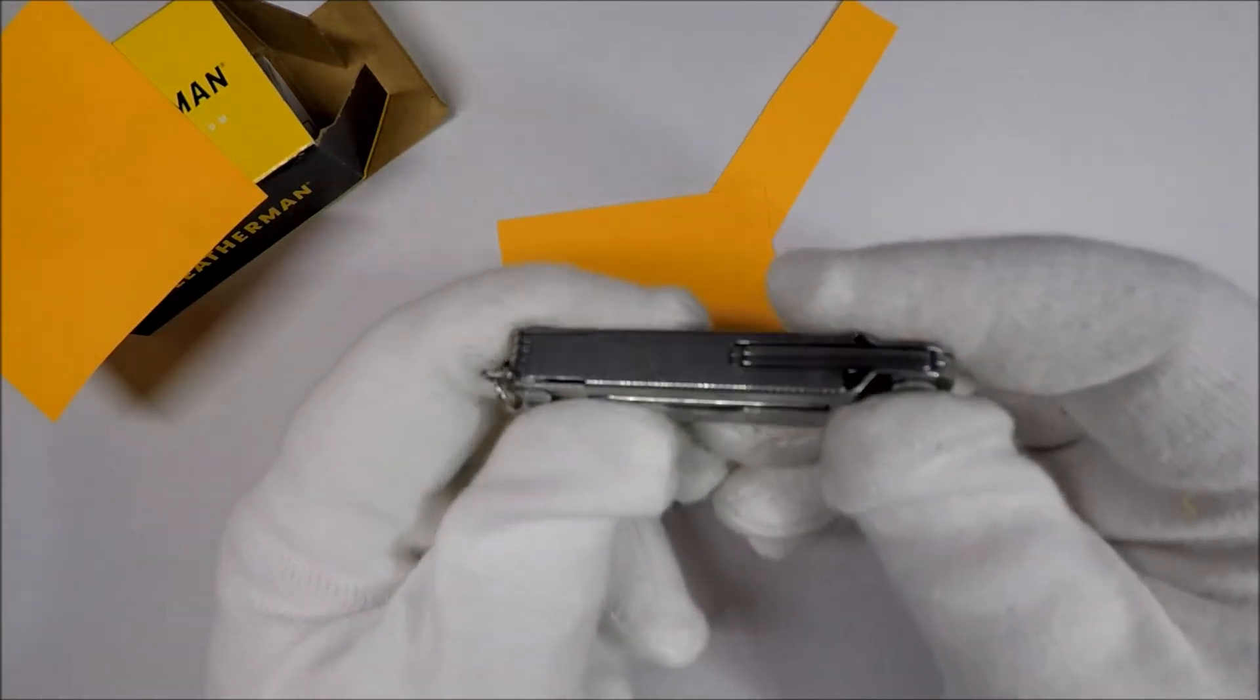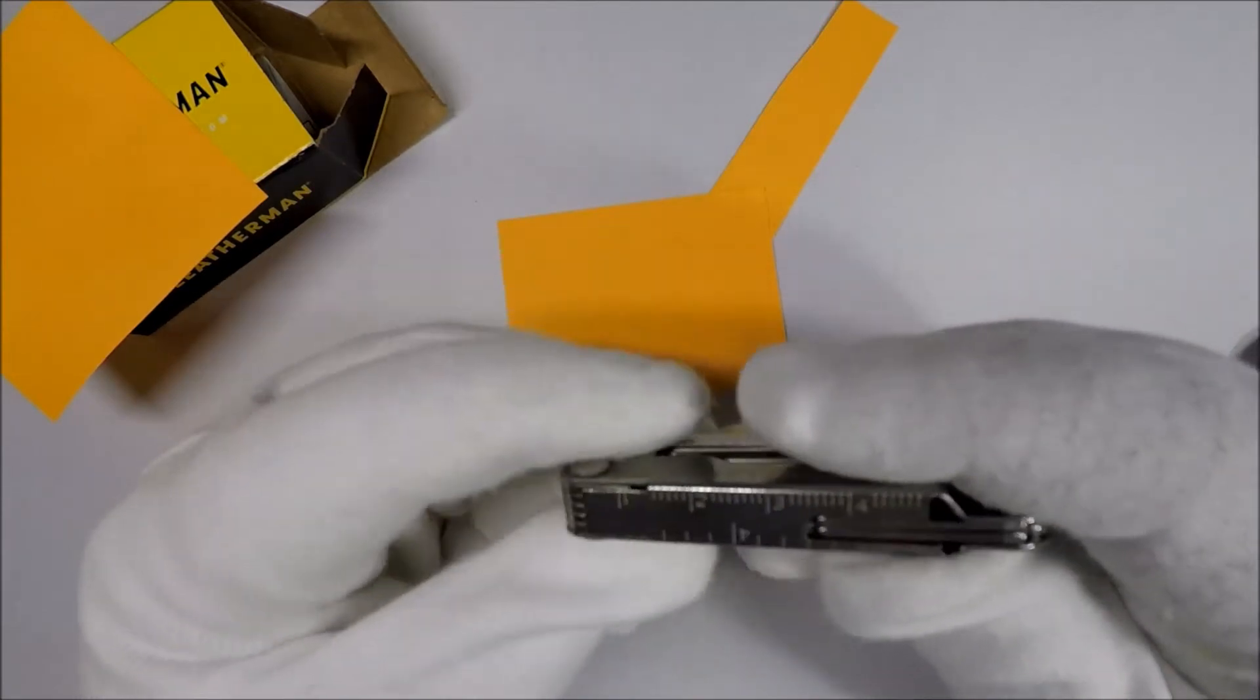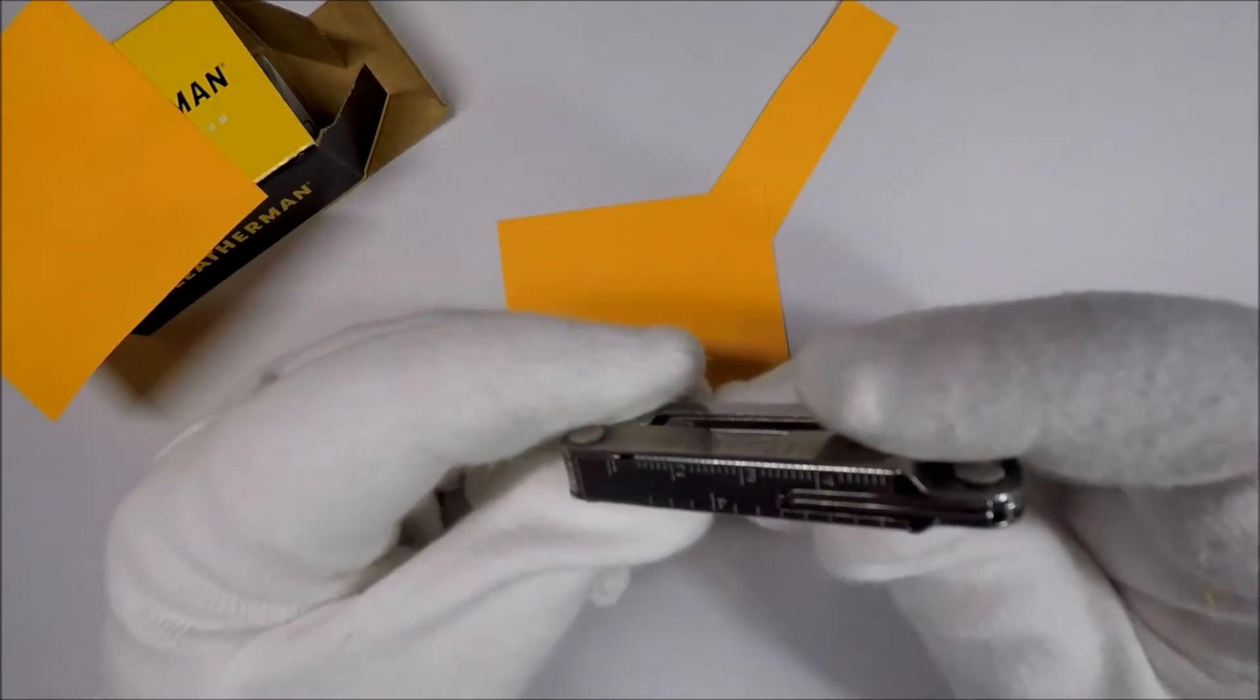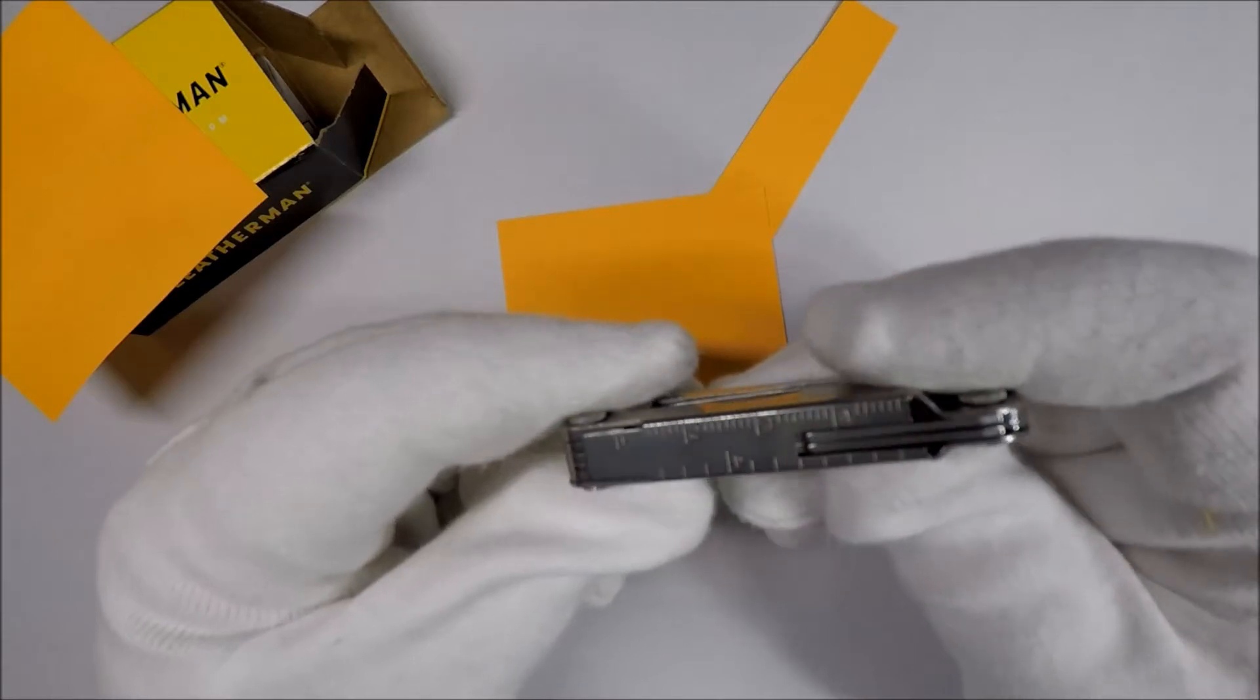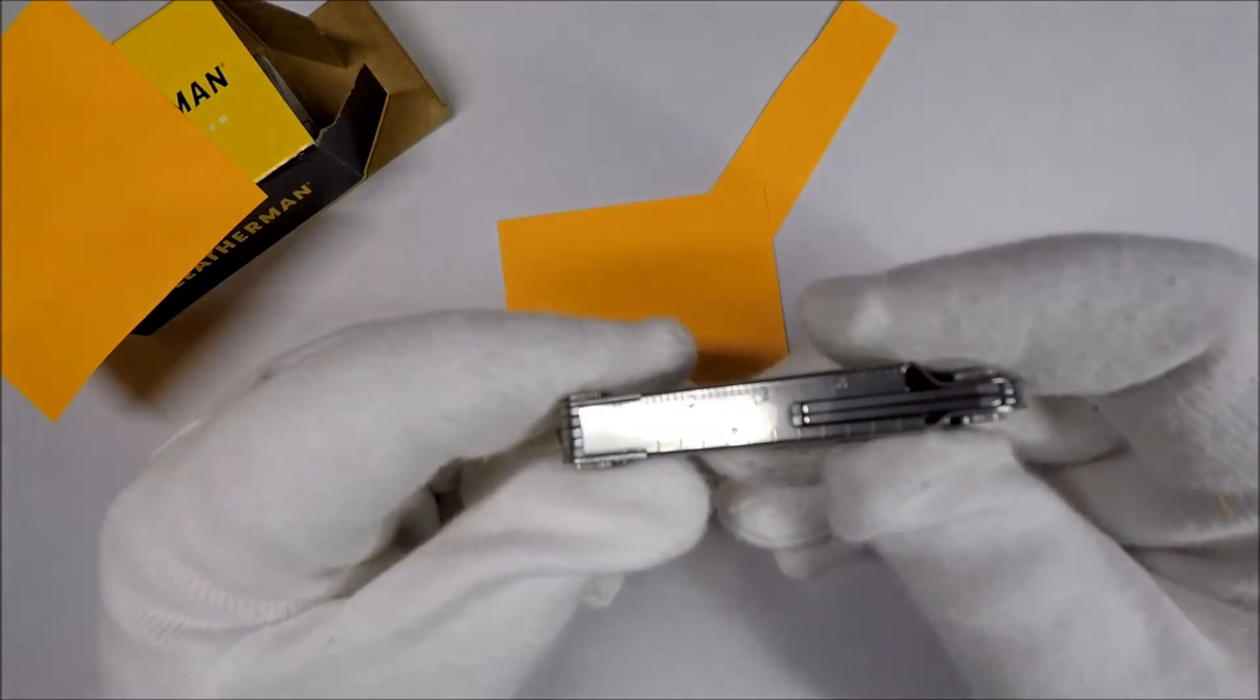It does have, you can hopefully see right there, it's got some markings for like a ruler. Can you see that in the light?